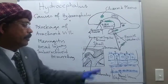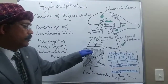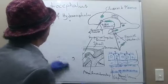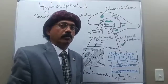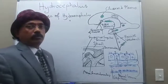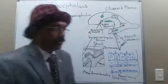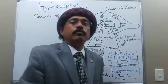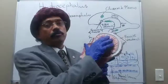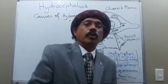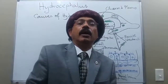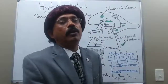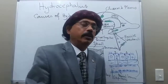If the arachnoid villi are blocked, CSF cannot go from the subarachnoid space to the superior sagittal sinus. Sometimes we don't know the cause and we call it idiopathic. In other cases, brain substance may be atrophied due to stroke or diseases like Huntington's disease, causing the cavity to enlarge — we call this hydrocephalus ex vacuo.